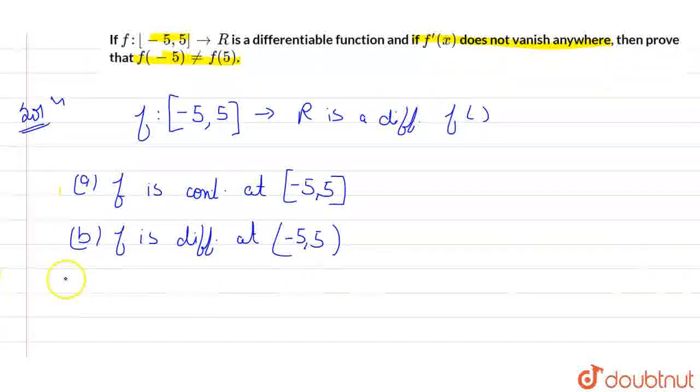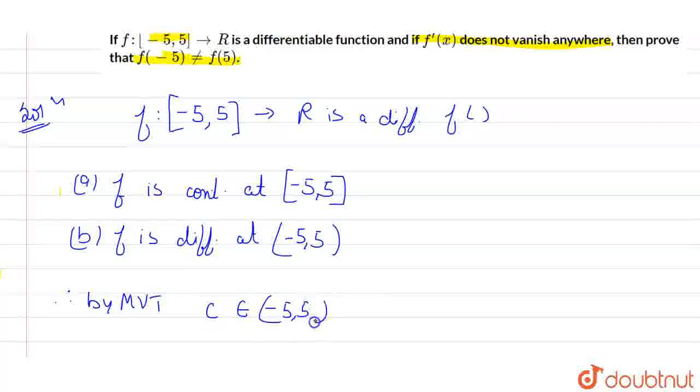Therefore, by the mean value theorem, or we can use Rolle's theorem—both same things, Lagrange's mean value theorem, Rolle's theorem—we can say that by MVT, there exists some value c which belongs to (-5, 5). That's what we know about Rolle's theorem or mean value theorem.